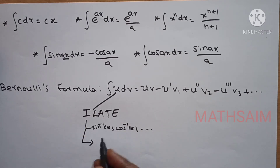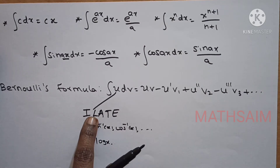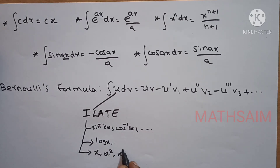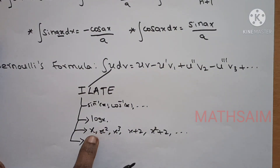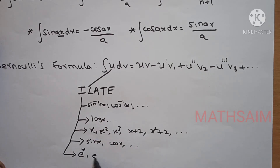Let's look at the log term — L is the same preference. Now let's look at the next term. The algebraic term is A. Algebraic terms are x squared, x cubed, and similar polynomial terms. Next is T — that is the trigonometric term: sin x, cos x, tan x. And next is E — that is the exponential term, e power x. So, ILATE: Inverse, Log, Algebraic, Trigonometric, Exponential. We will consider u from this priority.